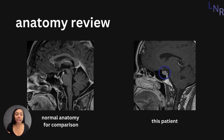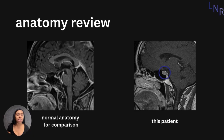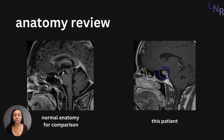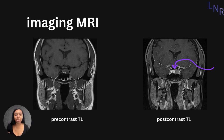To review some anatomy: on the left side of the screen, we have a sagittal view of normal brainstem, cerebellum, thalamus, hypothalamus, and pituitary gland. However, on the right side of the screen, we do have an abnormal pituitary gland.